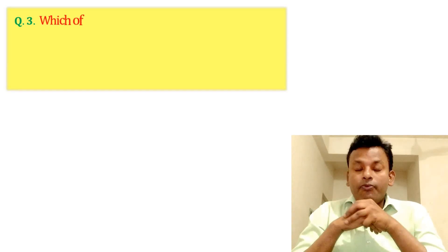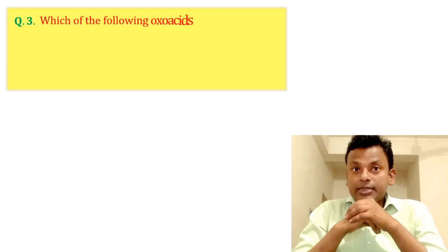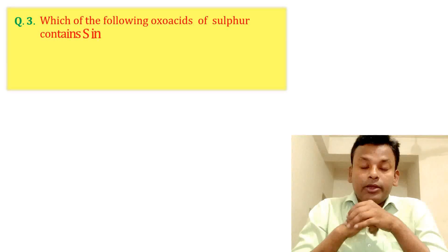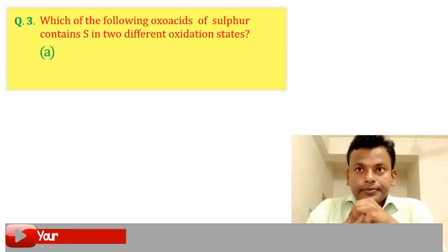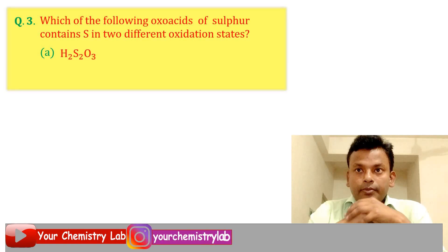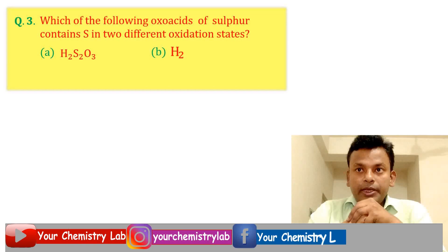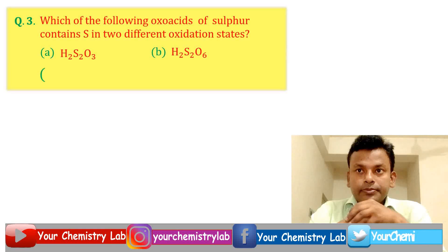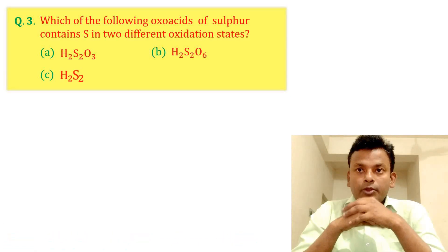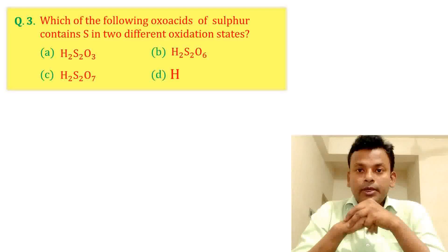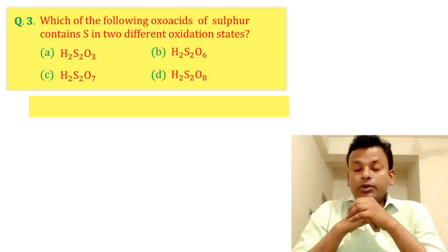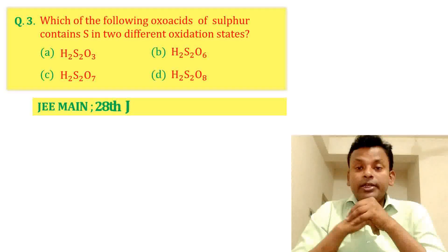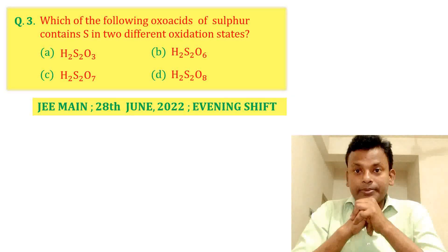Question three: Which of the following oxoacids of sulfur contains sulfur in two different oxidation states? Options are: option A, option B, option C, and option D. This question was set in JEE Main 28th June 2022 evening set.